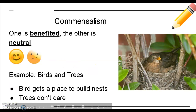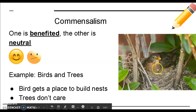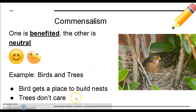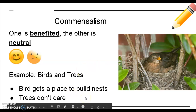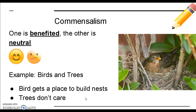In commensalism, one species is benefited and the other is neutral. One example is birds and trees: the birds benefit because they get a place to build their nests and raise their offspring, but the trees don't really care that the bird is there. The bird isn't hurting the tree, nor is it really helping it. The bird just kind of sits there and the trees don't mind.